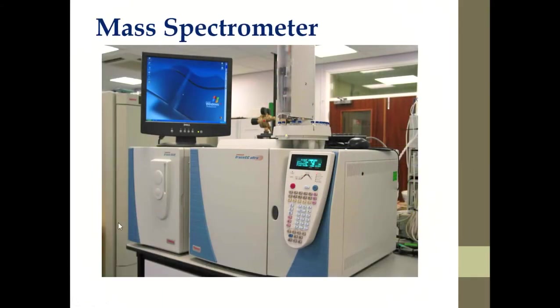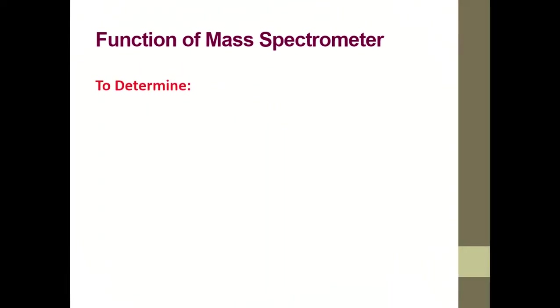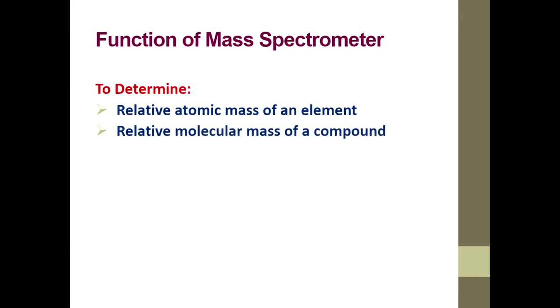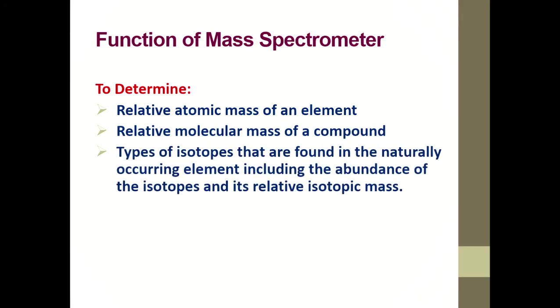So let me introduce to you here a typical mass spectrometer that we have in the physical chemistry laboratory. Okay, what is the function of mass spectrometer? Firstly, to determine the relative atomic mass, to determine the relative molecular mass, and to determine the types of isotope found naturally for that particular element. We also can recognize the structure of a compound in an unknown sample.